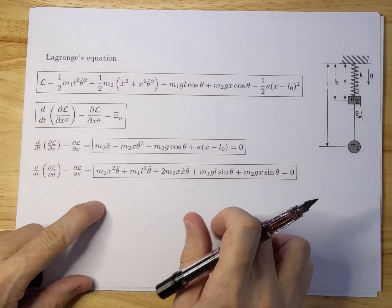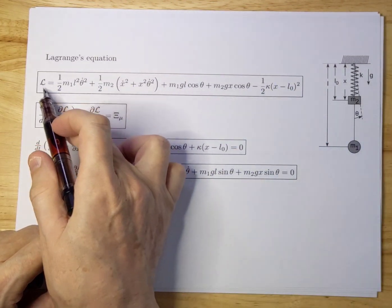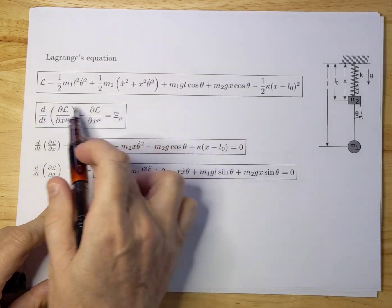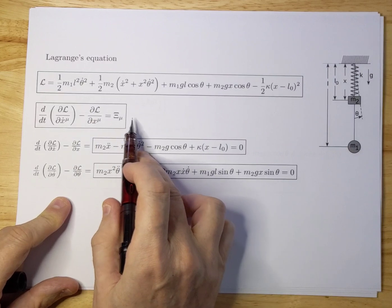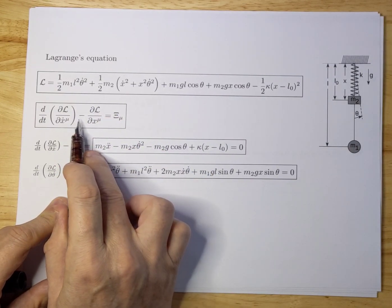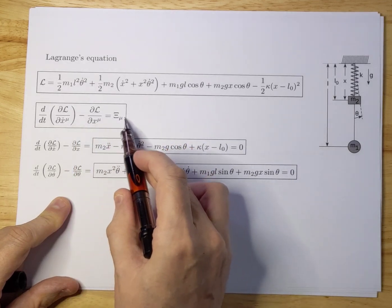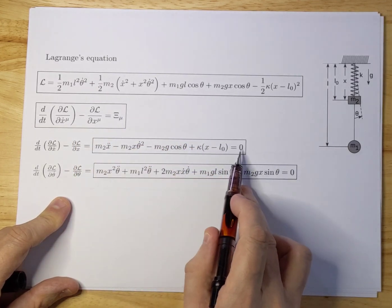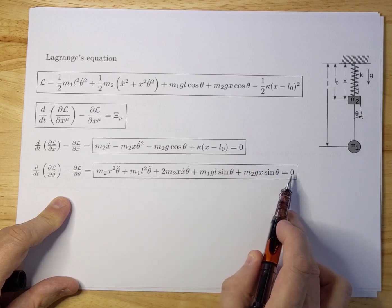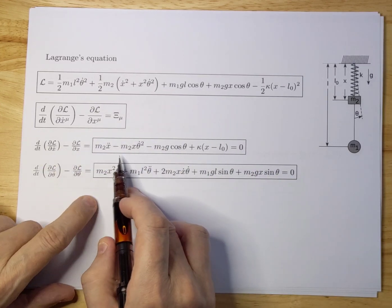For clarity I copied the Lagrangian and we're going to use the Lagrangian equations. We have two generalized coordinates, X and theta, so there will be two equations of motion. There were no generalized forces, so both generalized forces will be zero. You see that on the right hand side, they're both zero. On the left hand side we have to work it out.